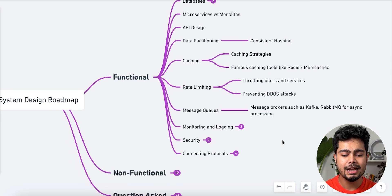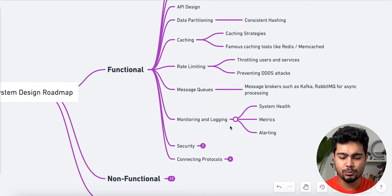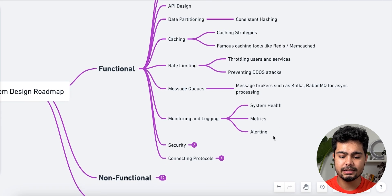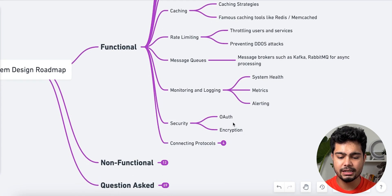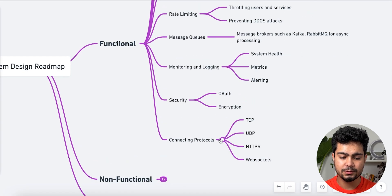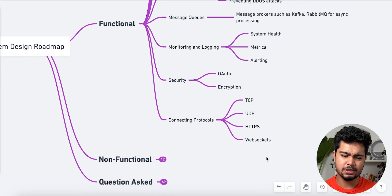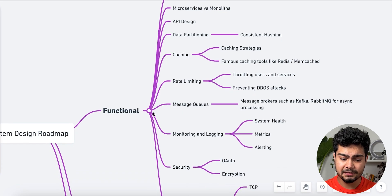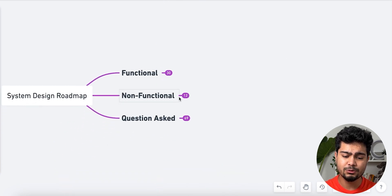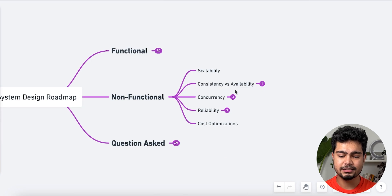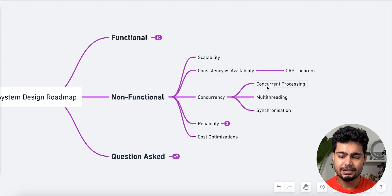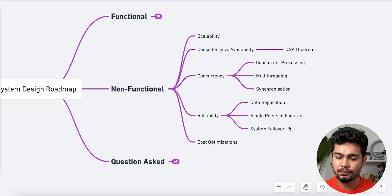You should find and share resources for these topics. Next is monitoring and logging — system health, how to monitor metrics, and alerting. For security: OAuth and encryption. For connecting protocols: TCP, UDP, HTTPS — everything falls under functional requirements. For non-functional requirements: scalability, consistency, availability, CAP theorem, concurrency, multi-threading, synchronization, and reliability.